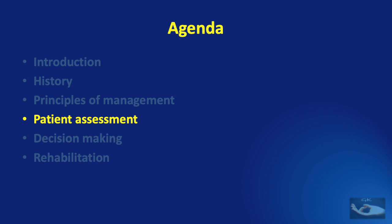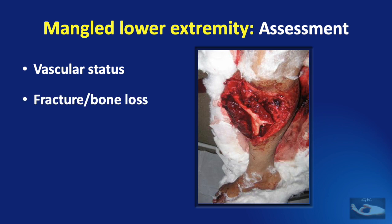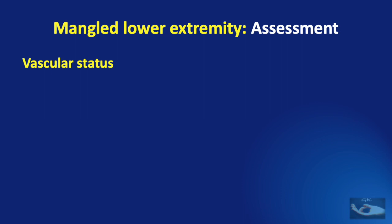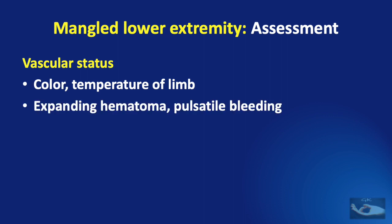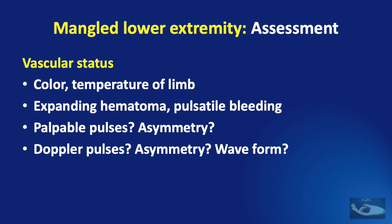Assessment of injuries by the reconstructive surgical team will consist of the orthopedic surgeon, the vascular surgeon, and the plastic and reconstructive surgeon. The first assessment should be of the vascular status of the limb — whether it is viable or not viable — then assessment of the fracture and bone loss, then soft tissue loss, and finally injury to the nerves. Vascular assessment includes assessing color and temperature, looking for expanding hematoma or pulsatile bleeding, peripheral pulse palpability, and asymmetry in Doppler pulses between both lower limbs.